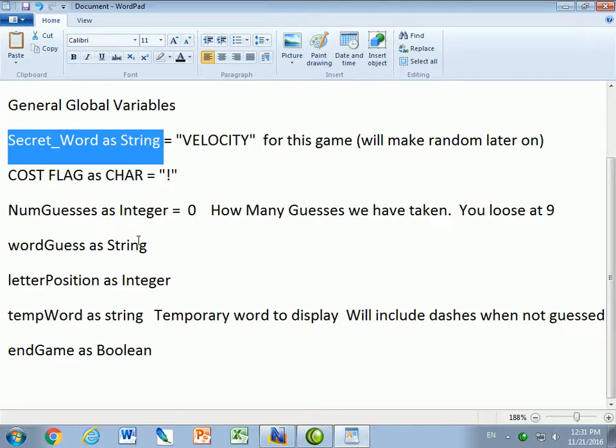In the beginning I'm going to make the secret word equal to velocity but we'll change it and make it a random word later on. But until we debug and get it to work we'll stick with a word that we know should work and in this case we'll make it called velocity.